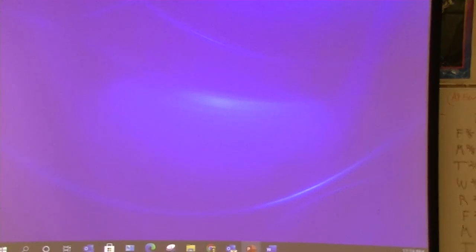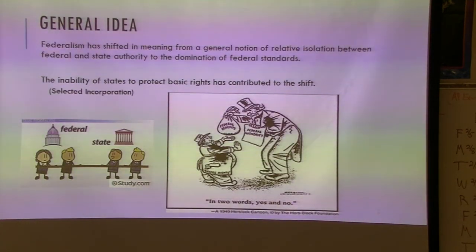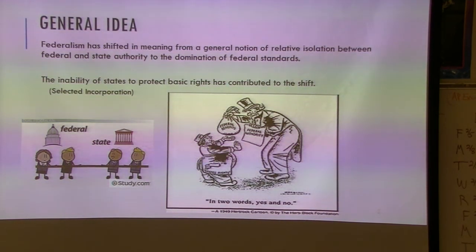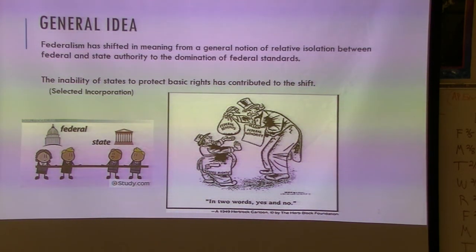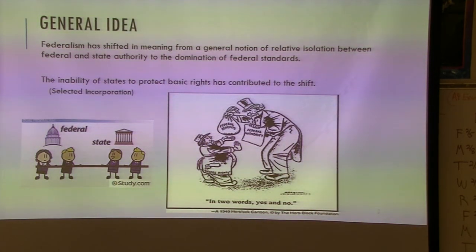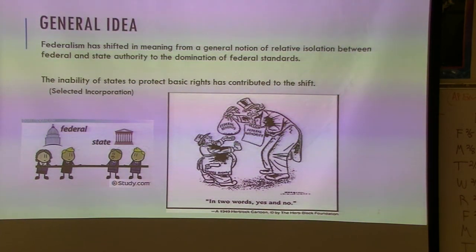Continuing on — this is a short one. The general idea from the historical side is that the federal government has gained more power over time. States have lost power, the federal government has gained it — a lot of this because of selective incorporation, because states were not protecting basic rights, and when you think of things like segregation and other laws.